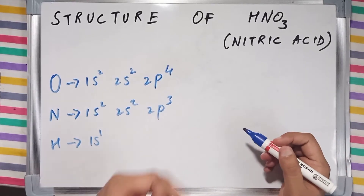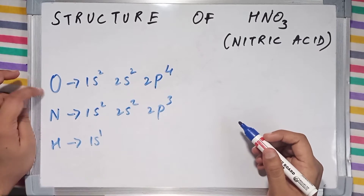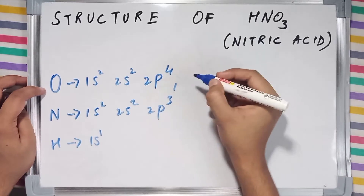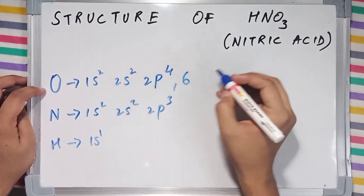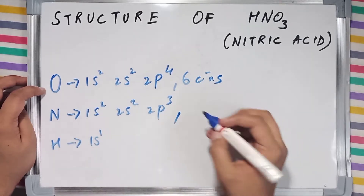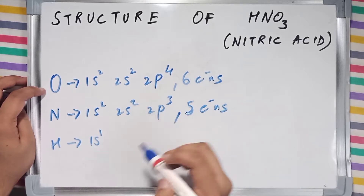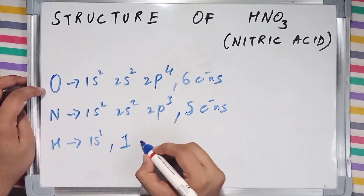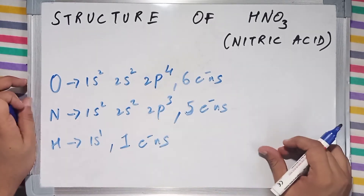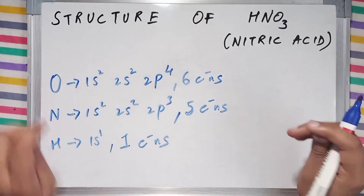We're going to draw the structure of HNO3, which is also known as nitric acid. The electronic configuration of oxygen is 1s2 2s2 2p4, which has 6 valence electrons (2 plus 4). Nitrogen has 5 valence electrons (2 plus 3), whereas hydrogen just has a single valence electron.